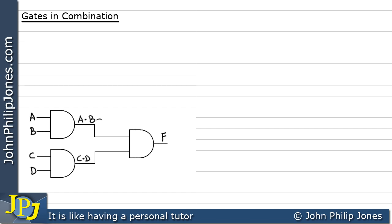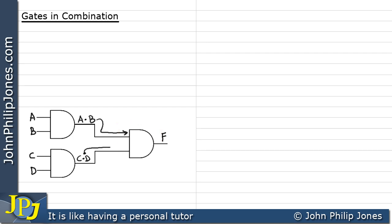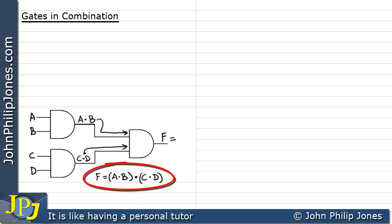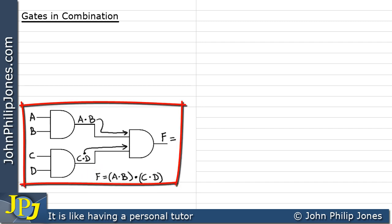The output from the first AND gate goes to one input of the final AND gate, and C and D goes to the other input. At F, it equals the input A and B — I'll put brackets around that to distinguish it from the other input, which is C and D. We AND those two inputs together, giving us the Boolean expression at F for this combinational logic circuit.